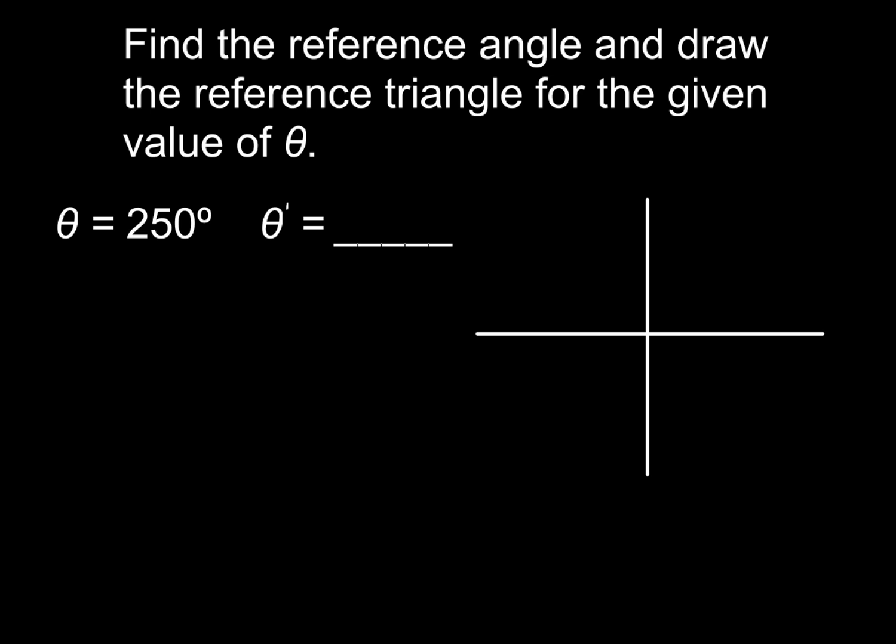So we're going to go ahead and take a look at our first example here, and I think you guys will pretty much pick up on this really quickly. Now 250 degrees, if that's our given angle θ, what we've got to do is kind of recognize what quadrant would 250 degrees be in? So I'm just going to kind of do a quick sketch right here, 250 degrees, if I went all the way around, that would be somewhere in quadrant number 3. So that's pretty close to back up here to 180 degrees.